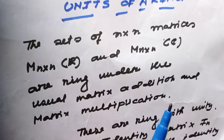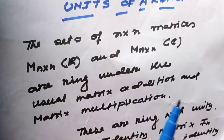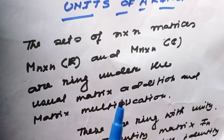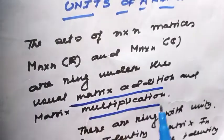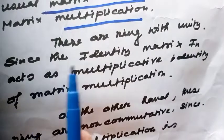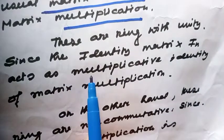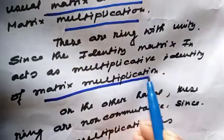Welcome back. In my earlier video I discussed the unity of a ring and units of a ring. Today I will discuss this topic elaborately, but first I recommend you watch my earlier video carefully — I have given the link in my description box. Consider the set of all n×n matrices with real entries and also complex entries. This is obviously a ring under matrix addition and matrix multiplication, and these are rings with unity, since the identity matrix acts as the multiplicative identity.